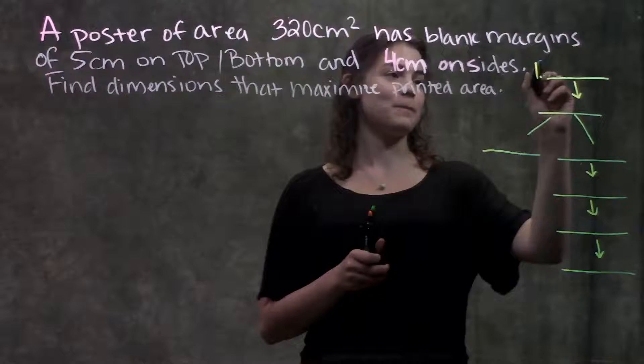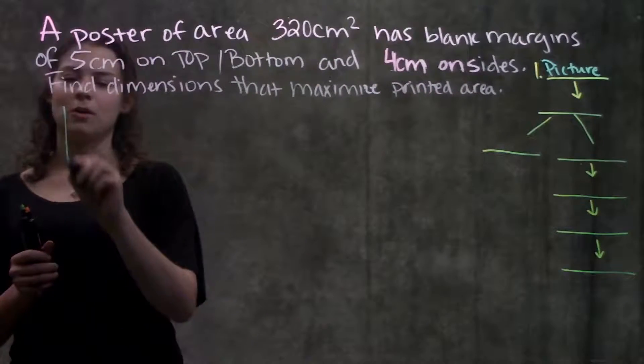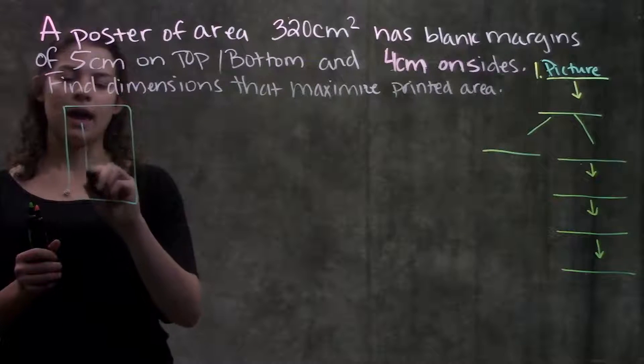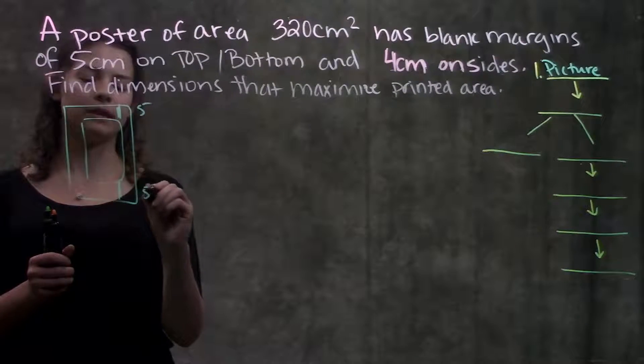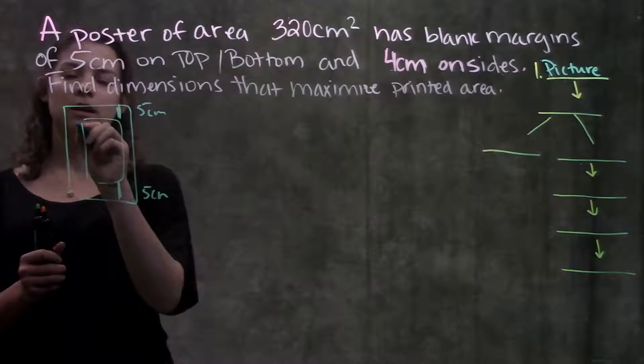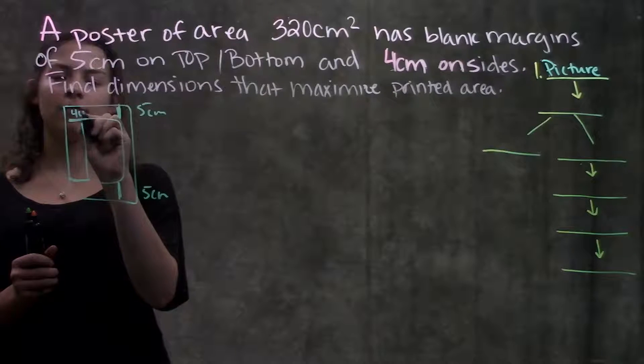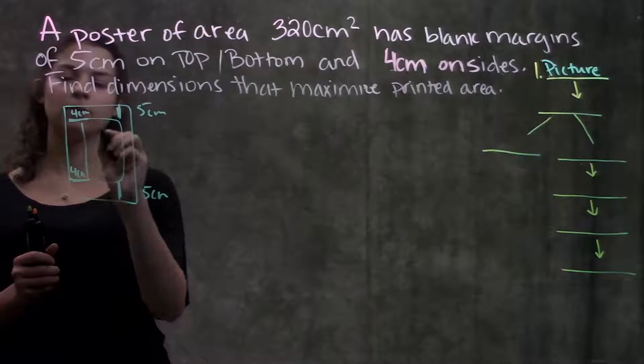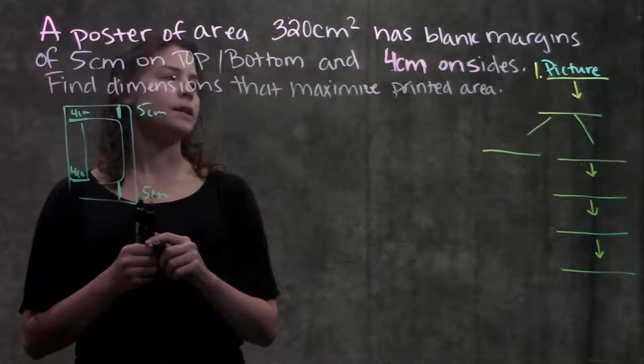Alright, so first step with these types of problems is to always draw a picture. So we have some poster, and we're told that the margins on the top and bottom are 5 cm, and the margins on both sides are 4 cm. And there's printed area in the middle here.